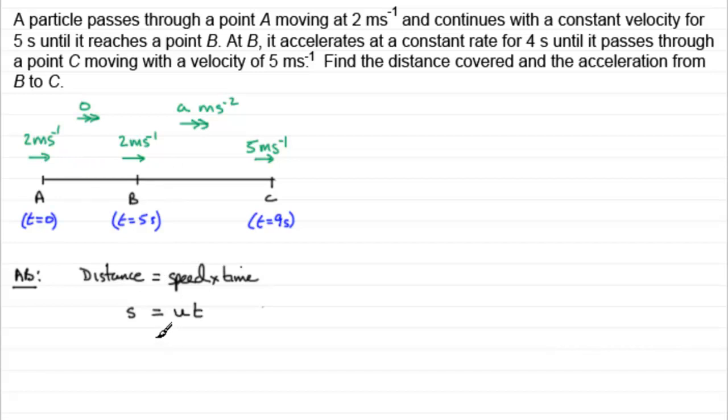So if we put in our values, U, the initial speed, is 2 times the time, which is 5 seconds, then it's going to have moved 10 meters. 10 meters from A to B.